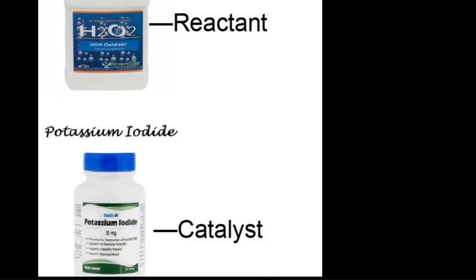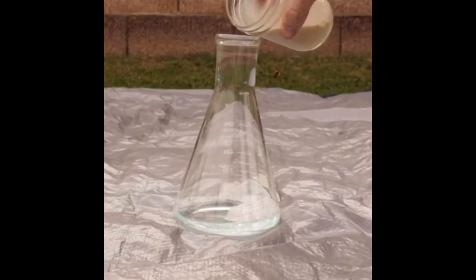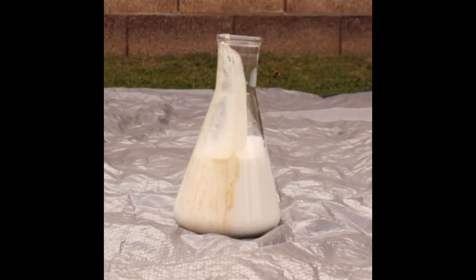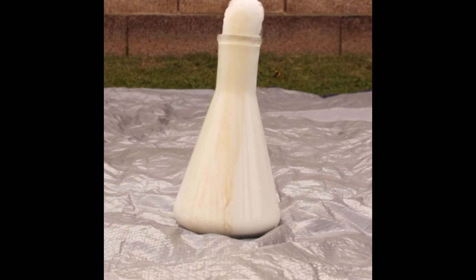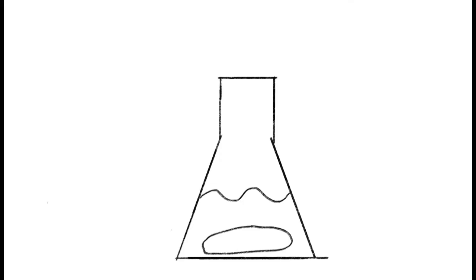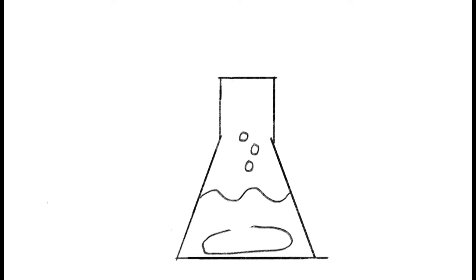Elephant toothpaste requires two major parts: a catalyst and a reactant. A catalyst is basically something that speeds up a reaction, and a reactant is a substance which undergoes change in a reaction. In this situation, our catalyst is yeast or potassium iodide, while our reactant is hydrogen peroxide. In the elephant toothpaste reaction, hydrogen peroxide is broken down into water and oxygen gas. The faster this oxygen gas is released, the faster and more explosive the reaction will happen.